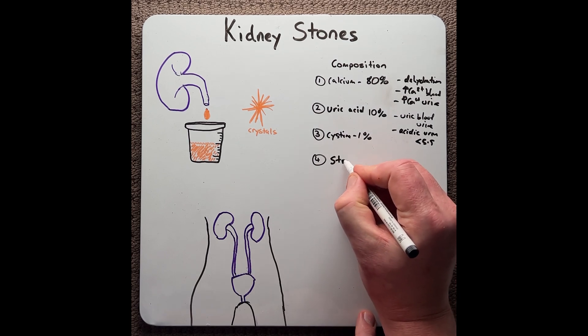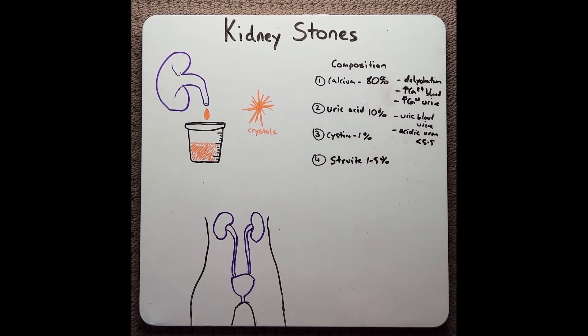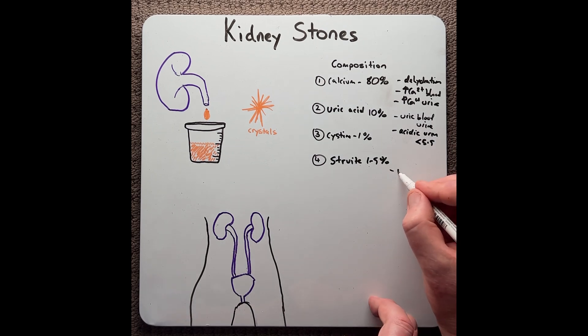Lastly, we have struvite. These are approximately 1% to 5% of all stones, and these seem to be associated with renal infections, particularly bacteria.